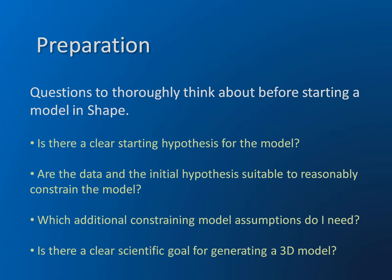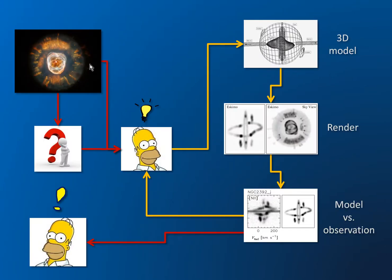And of course, is there a clear scientific goal for generating a 3D model? Do you need a 3D model for that, or are there simpler ways of explaining your data? Does the 3D model provide additional information to what you already have? You might start with an image or other type of data — spectra — and there are questions about it, either from the literature or questions that you have, and then you probably have an idea about how to solve this problem.